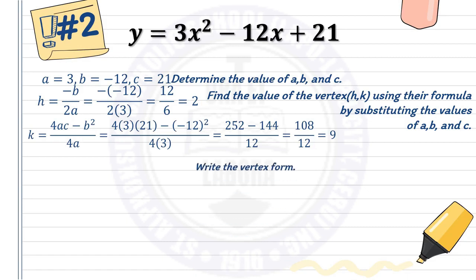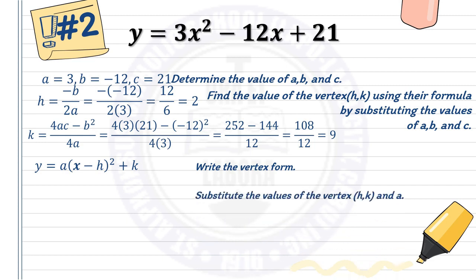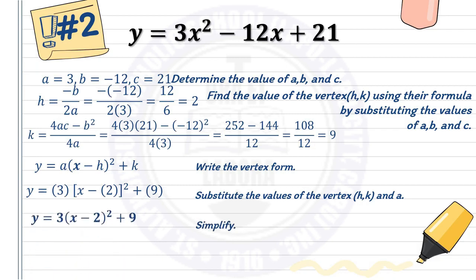Next, write the vertex form: y equals a times x minus h squared plus k. Substituting h = 2, k = 9, and a = 3, you get y equals 3 times quantity x minus 2 squared plus 9. That is the vertex form.